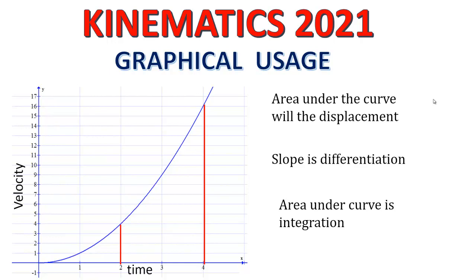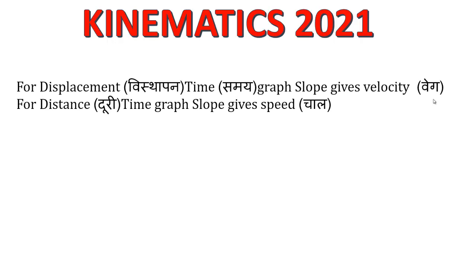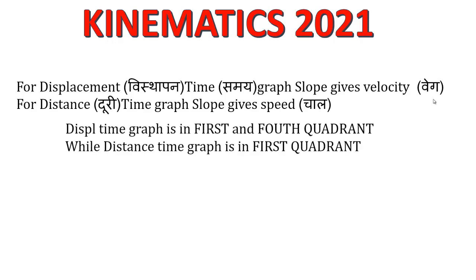These properties of graphs are going to be used everywhere in other quantities as well. For a displacement-time graph, the slope gives velocity; for a distance-time graph, the slope gives speed. A displacement-time graph can exist in the first and fourth quadrant, since time cannot be negative the second and third quadrants are excluded. A distance-time graph exists only in the first quadrant, because distance cannot be negative either.